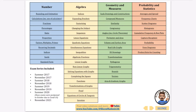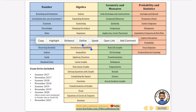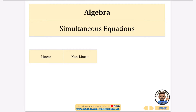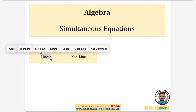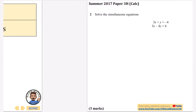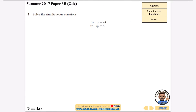Continuing with every exam question that's ever been asked, we're going to be looking at simultaneous equations. In the first part we're going to be looking at the linear ones. This whole document is fully hyperlinked and is always going to be linked in the description, so do make sure you check that out and check out all of the other videos on my channel homepage. These often come up in non-calculator, but this first one is coming up in a calculator paper.